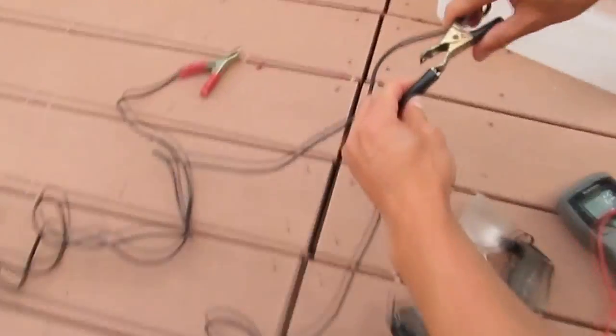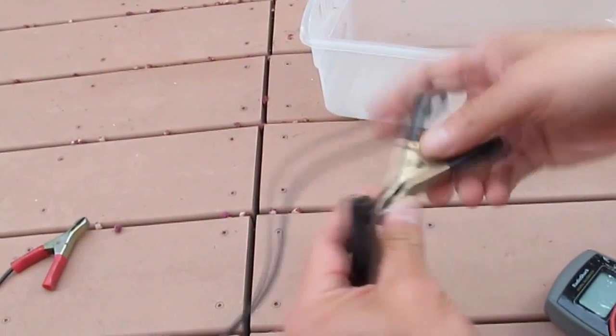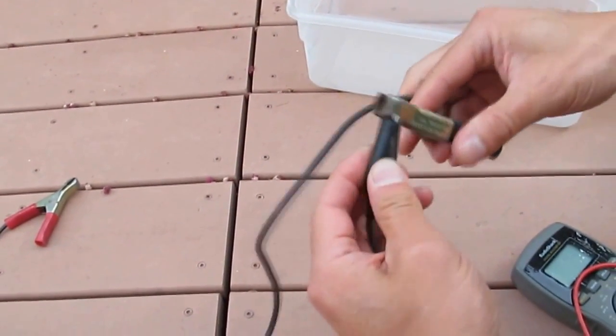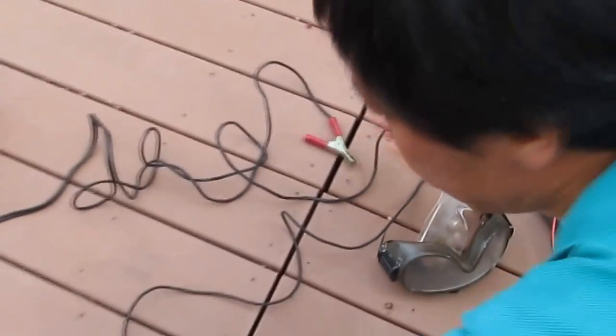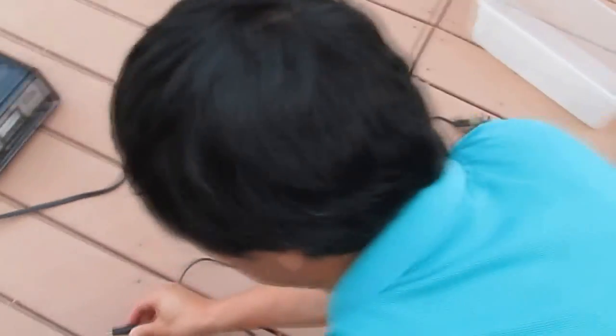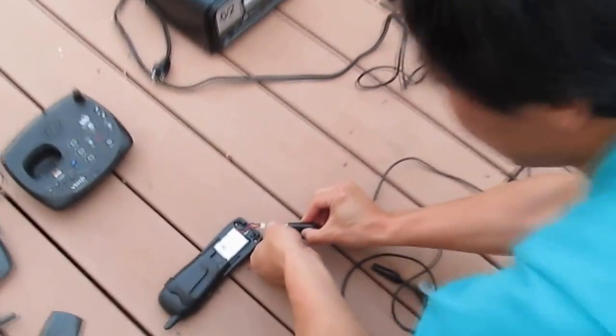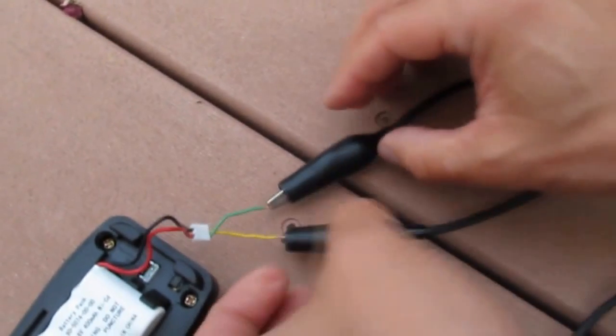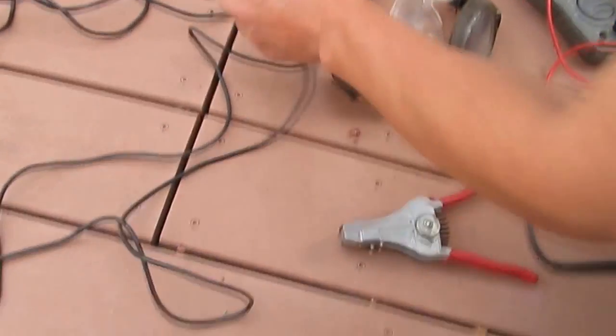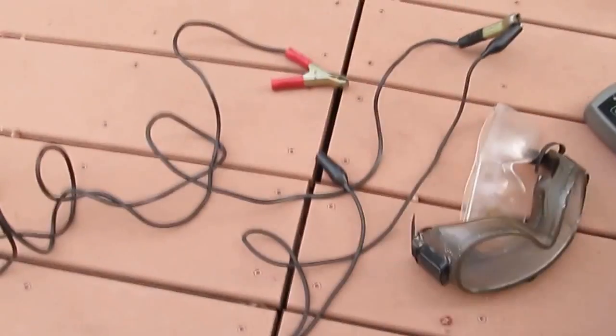So I connect this black one to this one, and the red one I will just connect to red, but I'm not going to do it right away. I will want to tap, because I don't really want too much current.